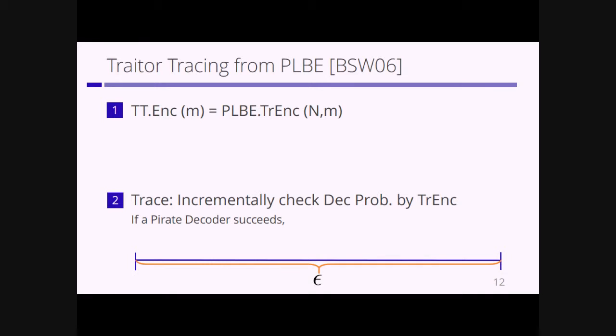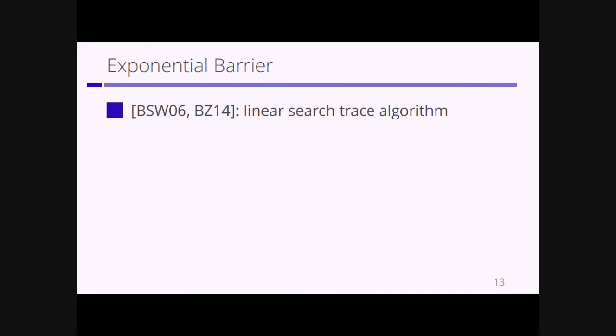From the security property of PLBE, if a pirate decoder succeeds at decryption, there must exist some index i where the success probability of decryption is greater than some non-negligible probability delta. This contradicts the security of index hiding, so the trace algorithm succeeds in tracing. However, Boneh-Naor and Boneh-Chari use a linear search trace algorithm, so the running time of this trace algorithm is O(N). This is the limitation of previous constructions.